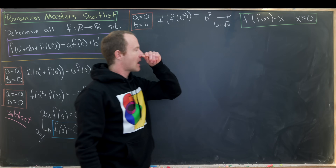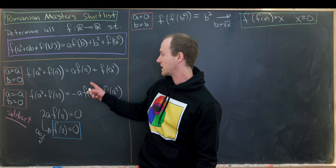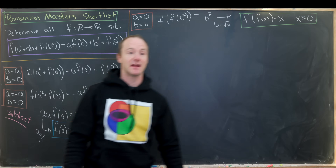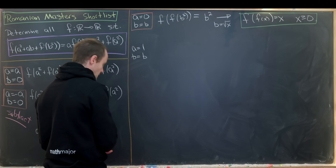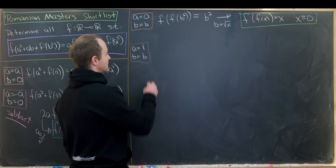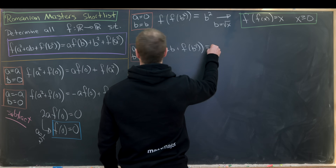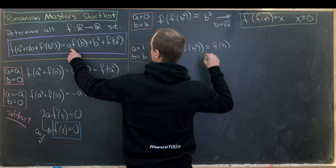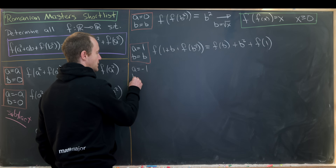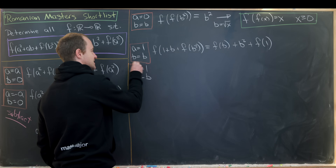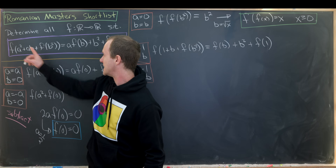To extend to negative values of x, we'll play a similar game. We take a = 1 and b = b, then a = -1 and b = -b. We change the sign on both a and b so that the a·b term stays the same — it'll still be b.